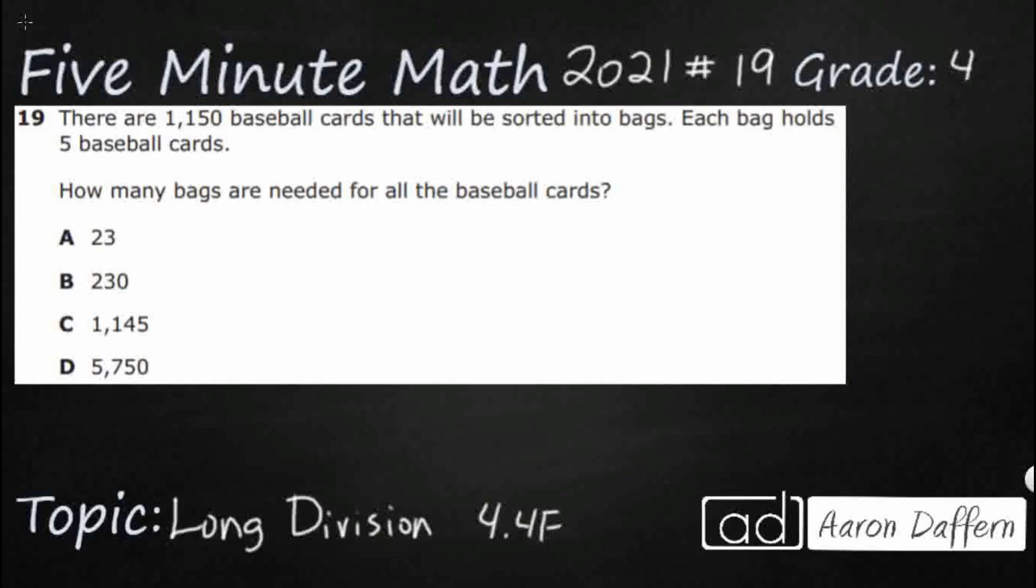So, we've got some baseball cards, exactly 1,150. They're going to be sorted into bags, and each bag holds five baseball cards. So, they don't necessarily say, but when we've got each bag that holds the same number, we've got equal groups.